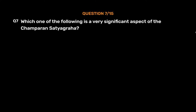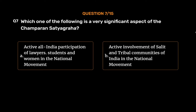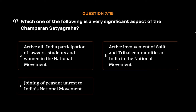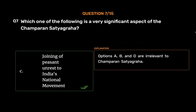Question No. 7. Which one of the following is a very significant aspect of the Champaran Satyagraha? Option A: Active all-India participation of lawyers, students and women in the national movement. Option B: Active involvement of Dalit and tribal communities of India in the national movement. Option C: Joining of peasant unrest to India's national movement. Option D: Drastic decrease in the cultivation of plantation crops and commercial crops. The correct answer is Option C: Joining of peasant unrest to India's national movement. Options A, B, and D are irrelevant to Champaran Satyagraha.